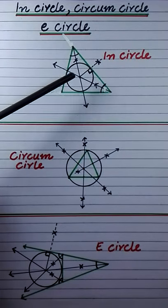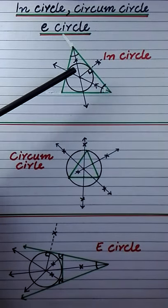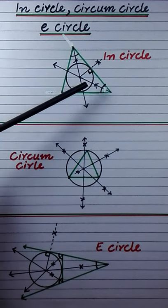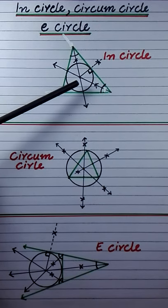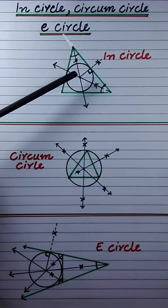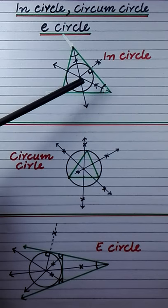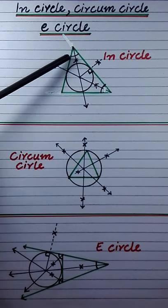Assalamu alaikum dear students. If a circle is present inside a triangle and it touches all the three sides of the triangle internally, then the circle is called an in-circle. To draw an in-circle, first we have to draw angle bisectors of the triangle.